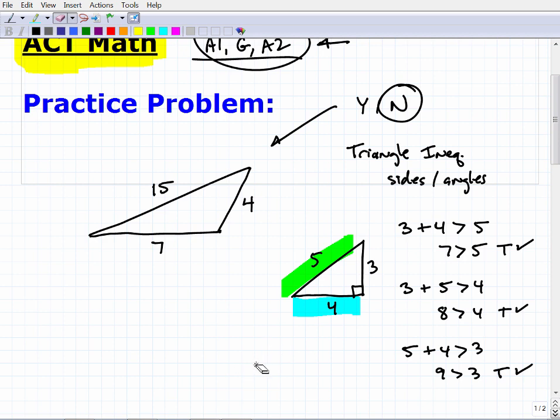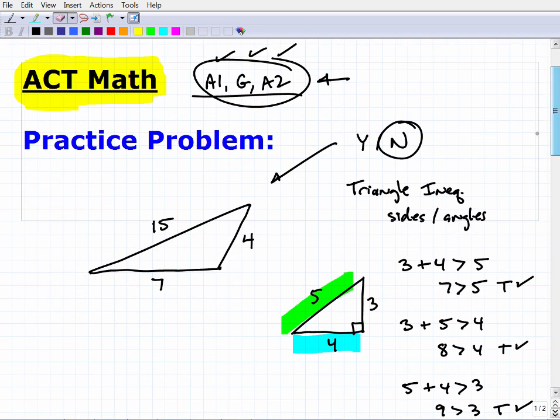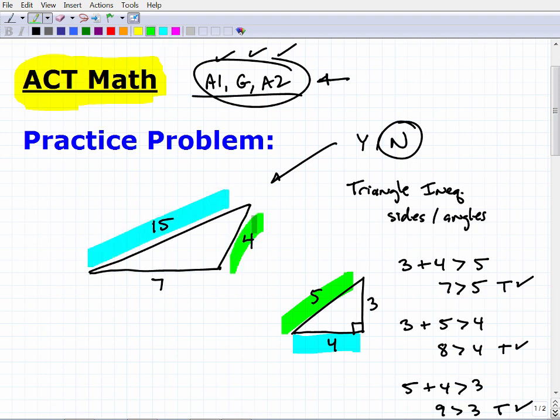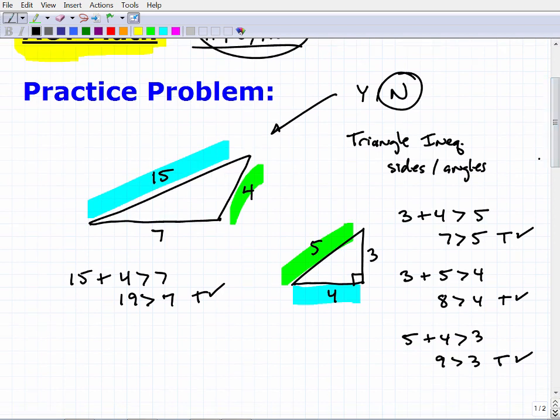Hopefully the way I'm explaining it makes sense to you, but now let's get back to this problem. We can see here I have 15 and 4. So let's test the sides of this triangle. I got 15 and 4, so 15 plus 4, is that greater than 7? And we got 19, yes, it is indeed greater than 7, that's true.